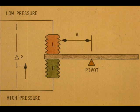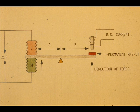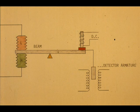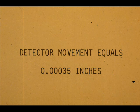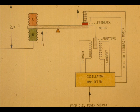In the force balance type transmitter, the force created by the differential pressure or pressure working through distance A is balanced by an electrical force working through distance B. A detector armature seeks a relatively fixed position to maintain beam balance. The total armature movement for full span of the transmitter is three or four ten-thousandths of an inch. An increase in differential pressure changes the armature position and increases the transformer's secondary voltage input to the oscillator amplifier. The increased DC output causes the force motor to rebalance the beam and bring the armature back to the original position.